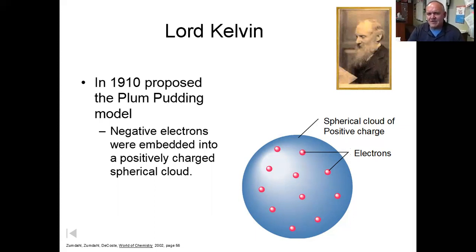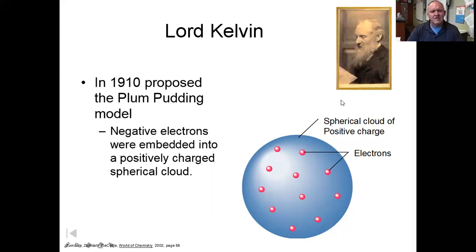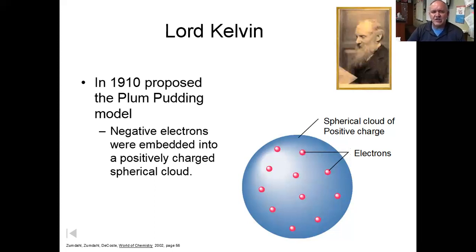The way to explain it to an American student is to call it the blueberry muffin model. The blueberries are like the electrons embedded within the muffin, and the whole muffin itself is the positive part. You might hear it called the blueberry muffin model, but it was originally called the plum pudding model by Lord Kelvin. This is our first major change in how we think about atoms since Dalton.